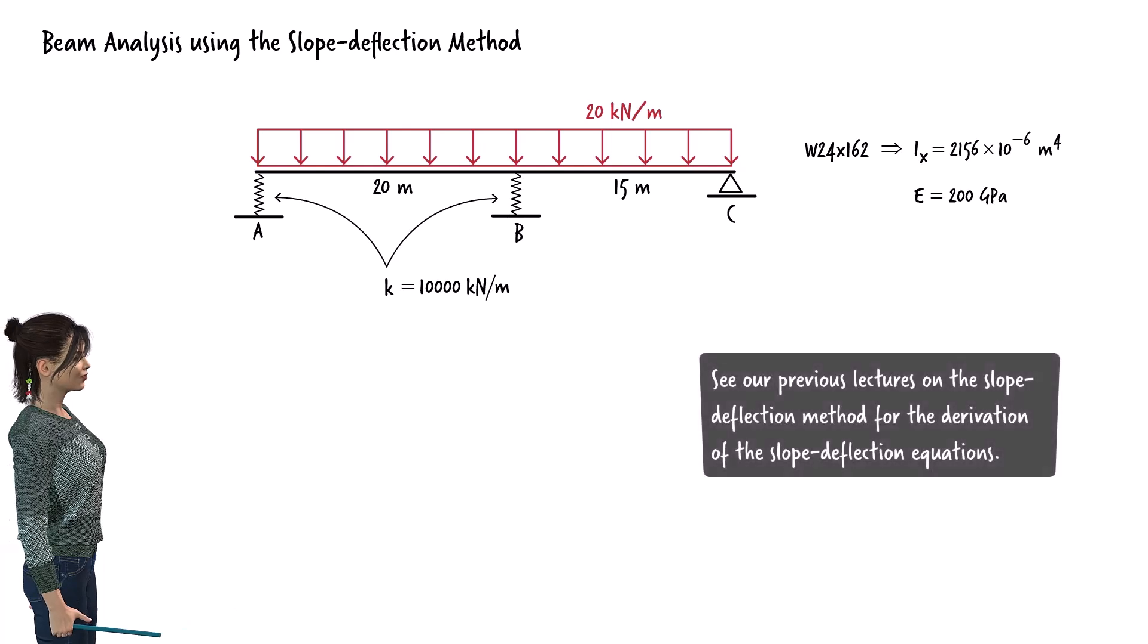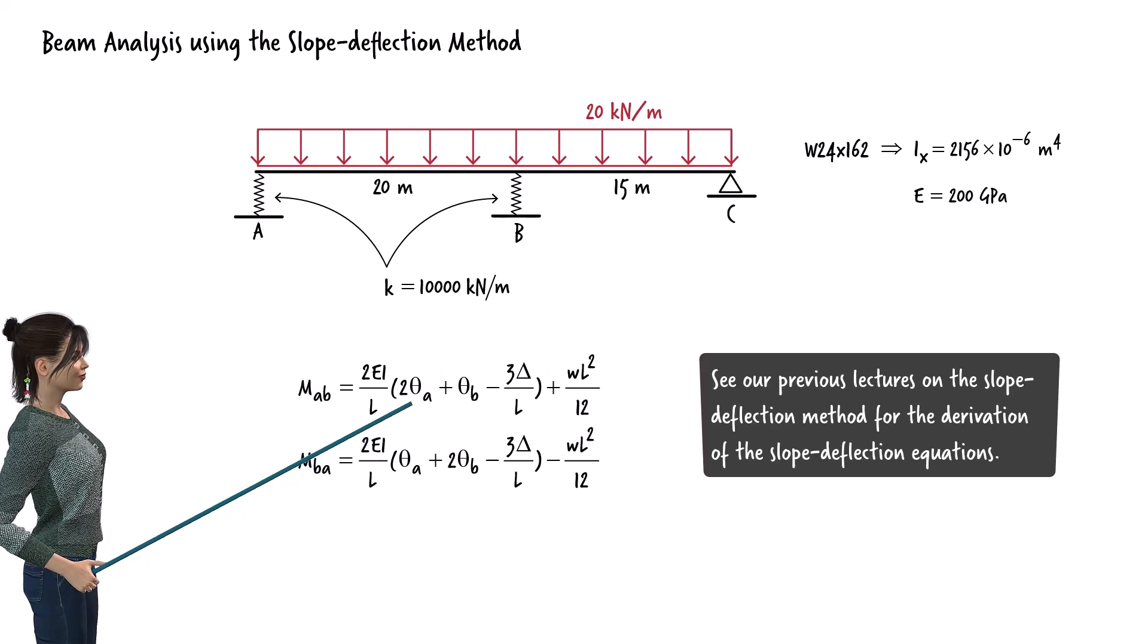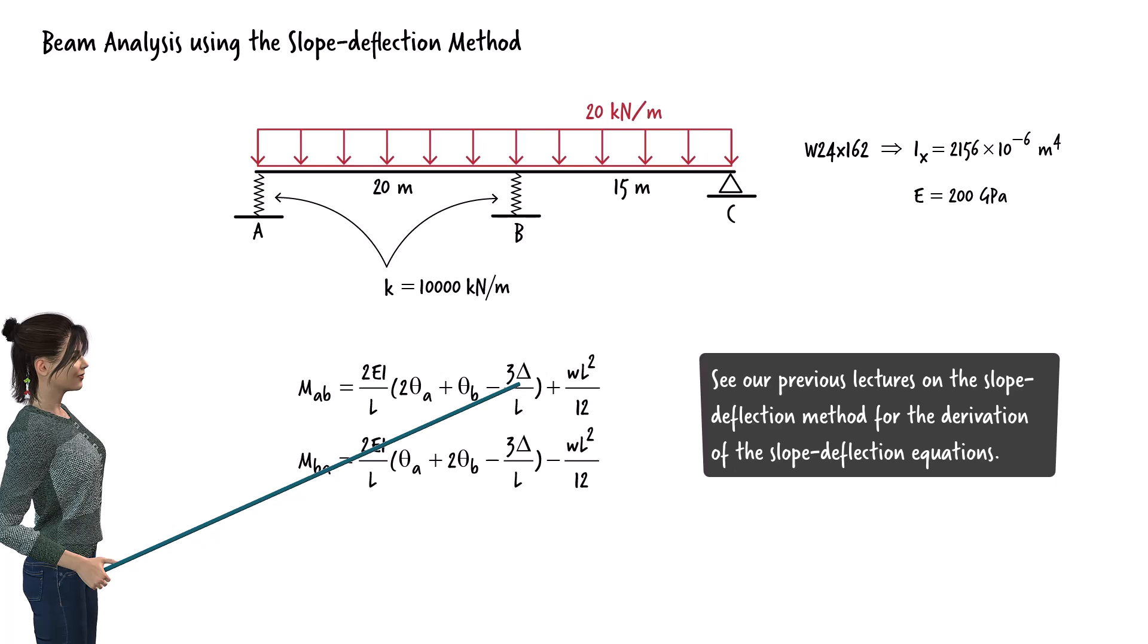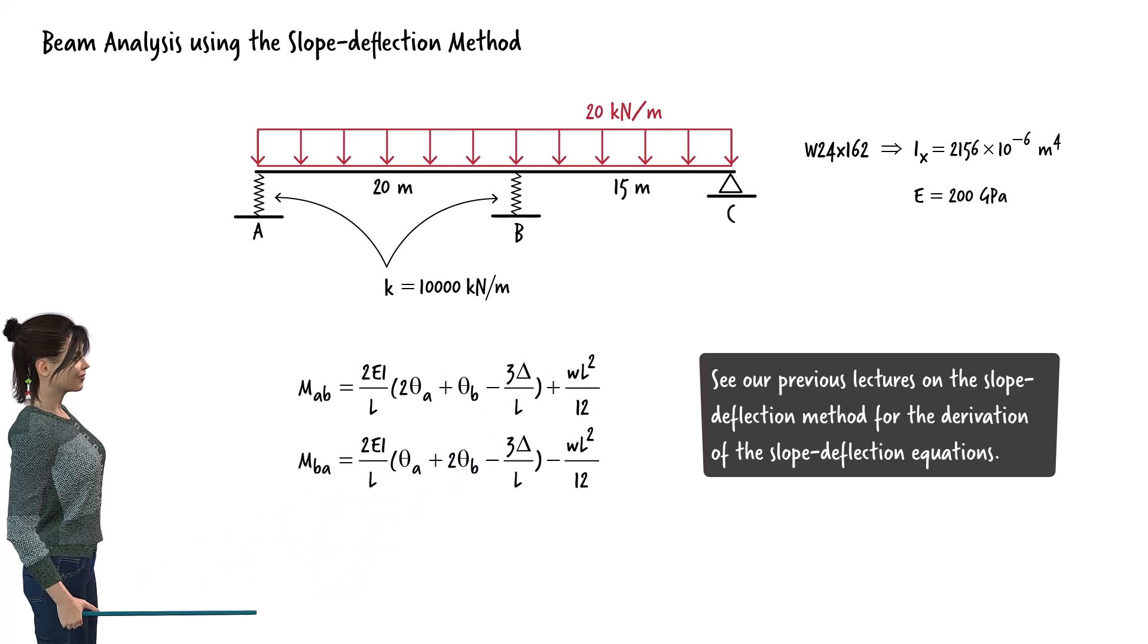As we showed in a previous lecture, the slope deflection equations for a beam segment can be expressed as, where theta is joint rotation, delta is the relative vertical displacement between the ends of the segment, and W is the magnitude of the distributed load acting on the segment.